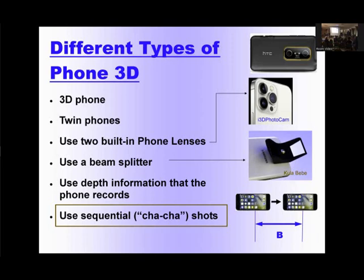You can also use a beam splitter — it has mirrors and records the scene in 3D through one lens. The latest phones also record some depth information, so you can utilize that to produce a stereo picture. And finally, there is the mother of all stereoscopic techniques: you can use your phone sequentially. You take a picture, you move the phone, you take another picture — and this is a 3D picture.